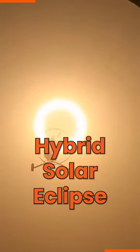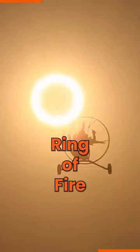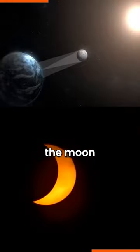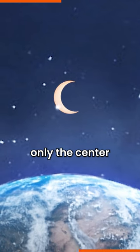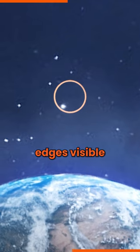It was a hybrid solar eclipse, also called the Ring of Fire. During this rare event, the moon positioned itself in a way that it covered only the center of the sun, leaving its outer edges visible.